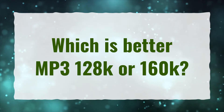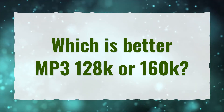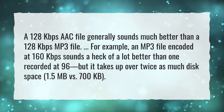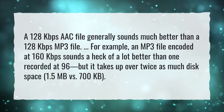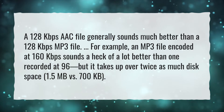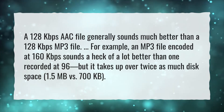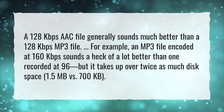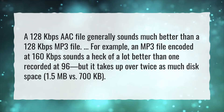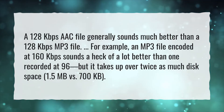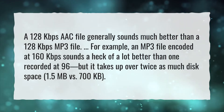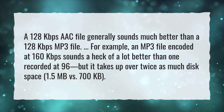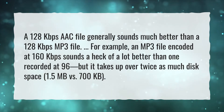Which is better MP3 128K or 160K? A 128 kilobits per second AAC file generally sounds much better than a 128 kilobits per second MP3 file. For example, an MP3 file encoded at 160 kilobits per second sounds a heck of a lot better than one recorded at 96. But it takes up over twice as much disk space — 1.5 megabytes versus 700 kilobytes.